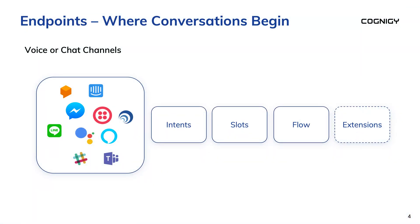Endpoints are where conversations begin. Conversations can start over voice or chat channels. For voice channels, Cognigy works with major telephony and contact center applications to allow users to call a contact center and have their interaction handled solely through an automated agent. For chat channels, Cognigy connects to a variety of endpoints — from a web chat on your website, to SMS, to Facebook Messenger, and internal channels like Teams, Slack, and Skype for Business.